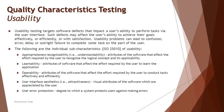Finally, user error protection refers to the degree to which a system protects users against making errors. This includes introduction messages, instructions before performing a task, and information messages at the beginning of each field — all of which act as supporting options helping the end user learn the product and understand instructions before interacting with the system.